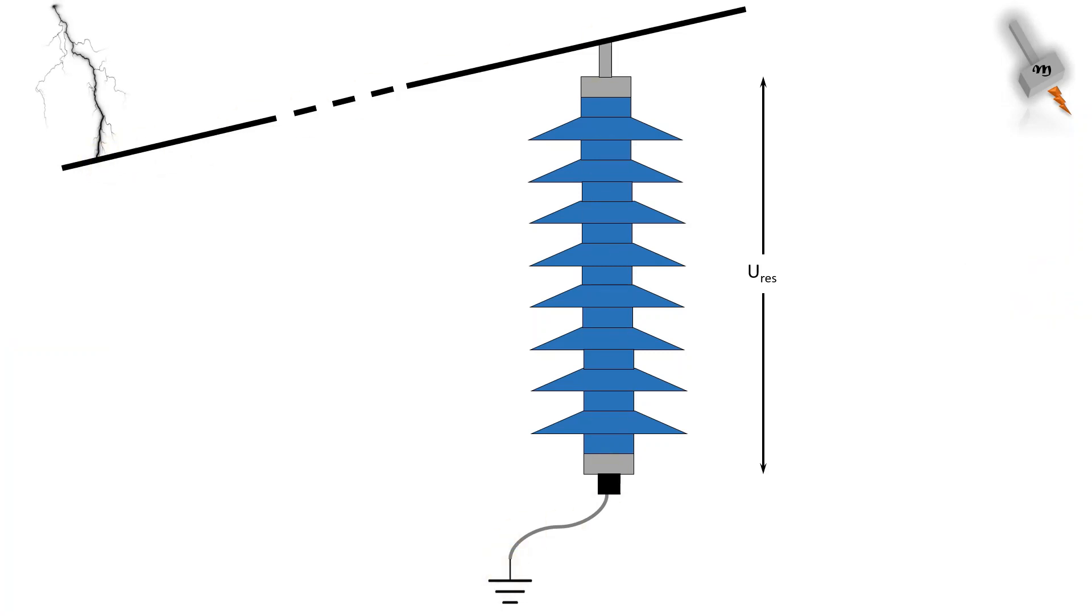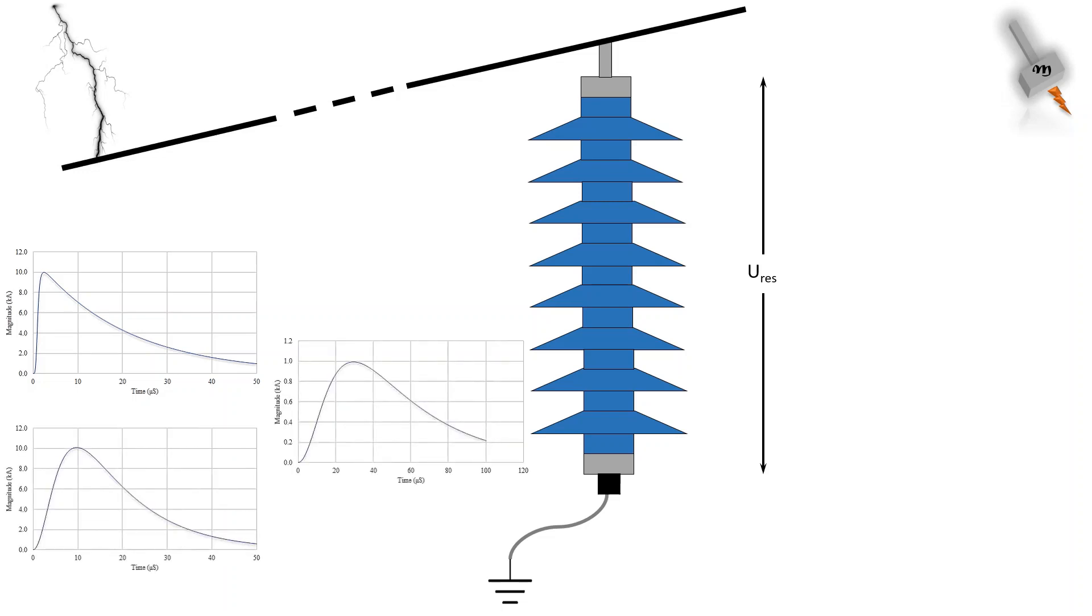Discharge current is the surge current which can be either steep impulse, lightning impulse, or switching impulse. Correspondingly, there is steep impulse, lightning impulse, and switching impulse residual voltage.